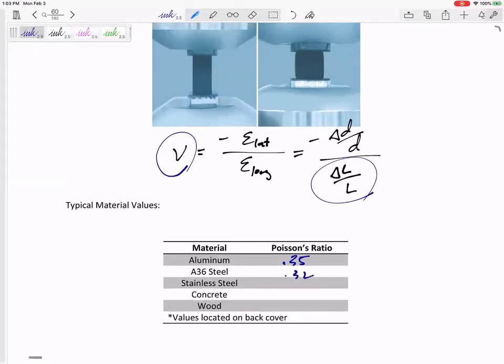Different materials have different Poisson's ratio, and this will just be given. I'll give this to you on the test. We're talking about 0.3, 0.27, 0.15, 0.31. Yeah, there you go—values located on back cover.